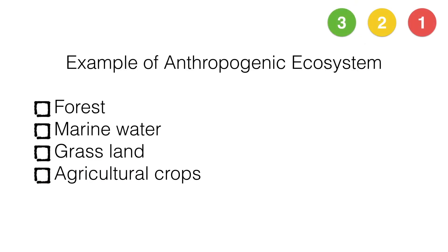An example of an anthropogenic ecosystem is: forest, marine water, grassland, or agricultural crop?